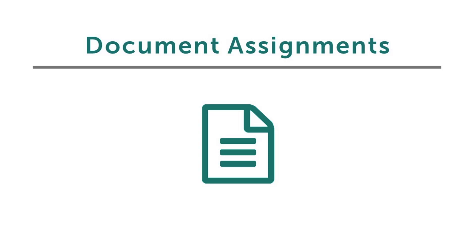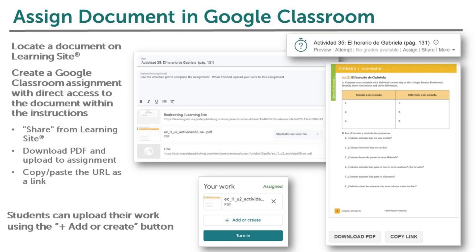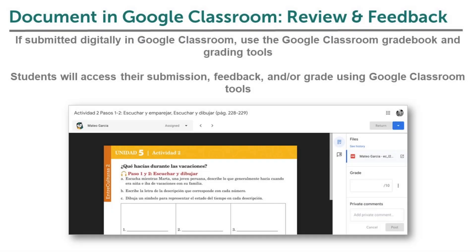Documents are fillable PDFs that can be used digitally or printed for in-person use. Documents can be assigned as a file upload task activity on Learning Site or added as a link or upload in a Google Classroom assignment. If you would like students to complete and submit a document assignment in Google Classroom, you will create a Google Classroom assignment that allows students to upload their completed work. You can use the Share button on Learning Site, copy and paste the URL link from Learning Site to the Google Classroom assignment, or upload the document directly to the Google Classroom assignment. Your students will access the document, use the built-in fillable sections, save their changes, and then upload their work to the Google Classroom assignment using the Add or Create button. You will review their submissions using the built-in Google Classroom grading tools, and you can also access student submission uploads in the Google Classroom gradebook by selecting the hyperlink title.